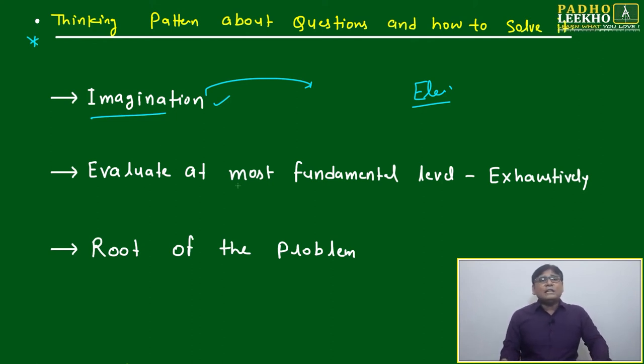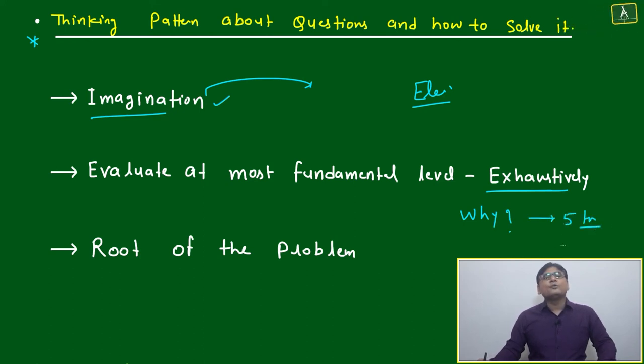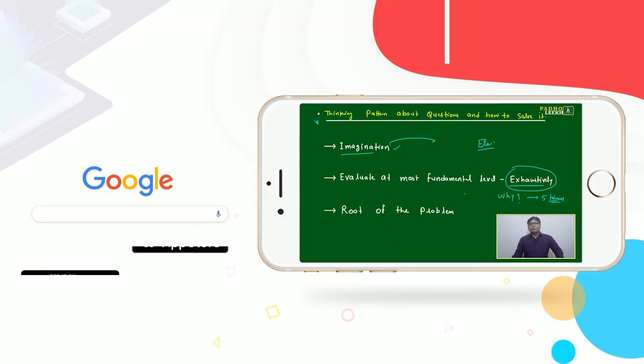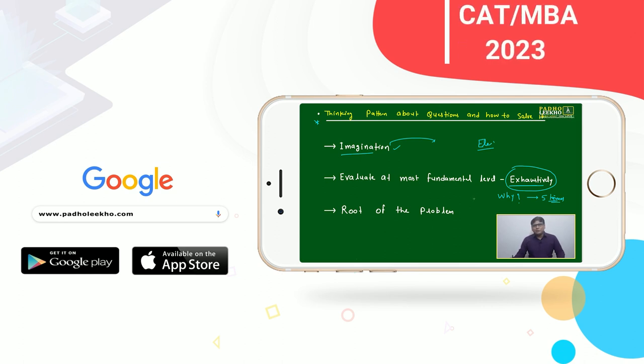Next is evaluate at most fundamental level, exhaustively. Anytime if you are getting problem in life, you just ask the golden rule five times: why, why, why, why, and why. This will give you the exhaustive analysis of the problem at most fundamental level.